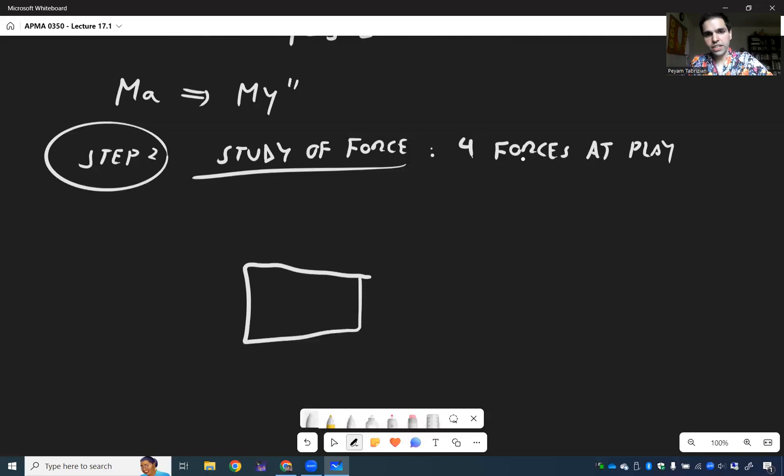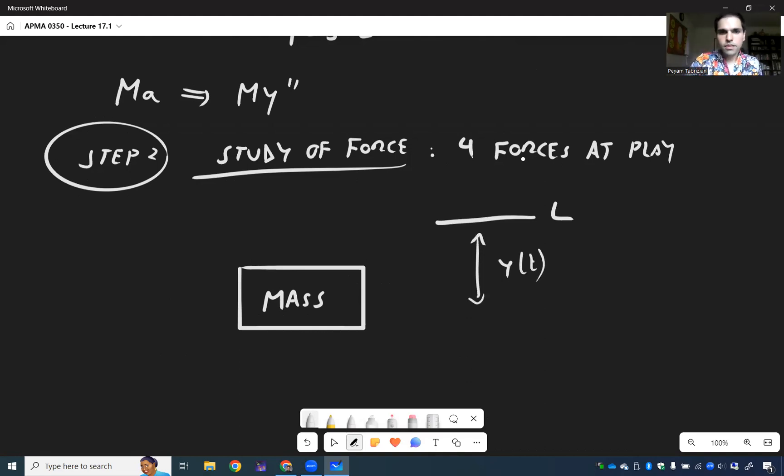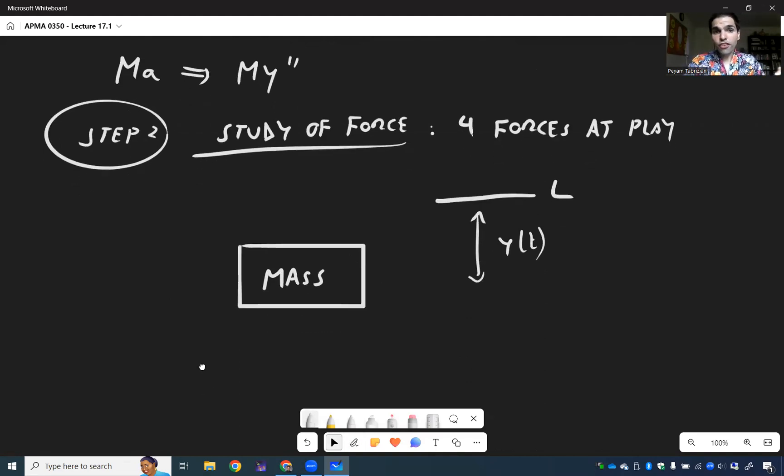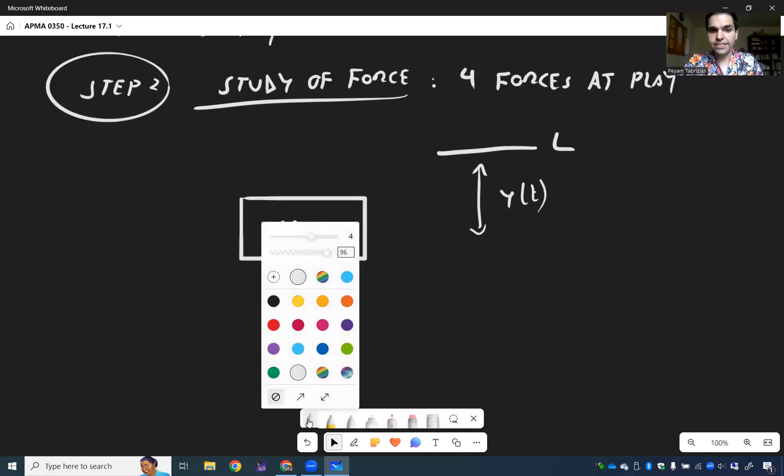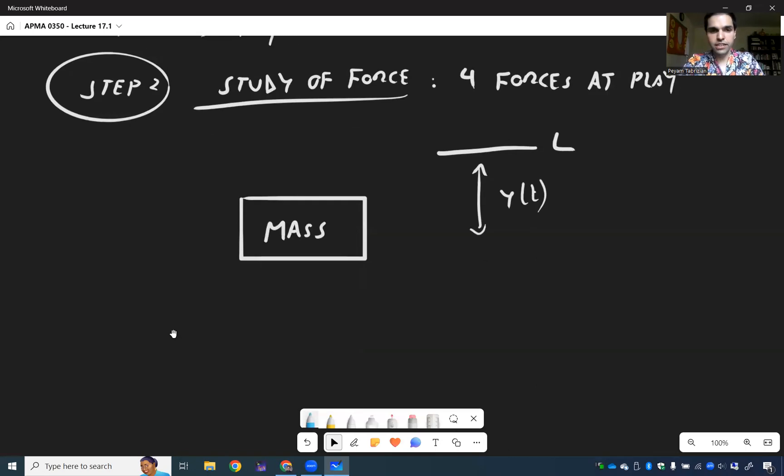And let's see how. So once again, here's the situation. We have this mass, I can draw a rectangle. So this is the mass. This is the equilibrium L, and that is the displacement.